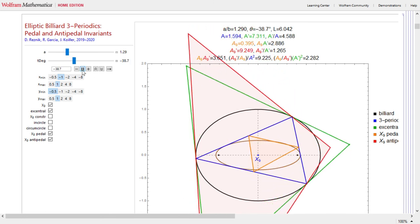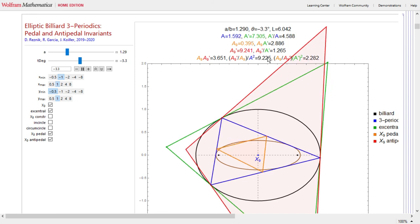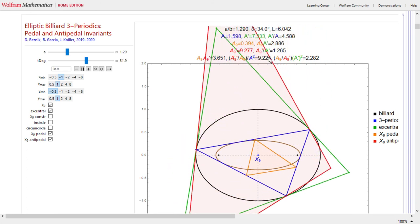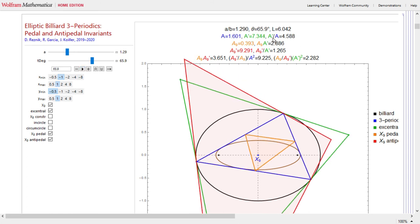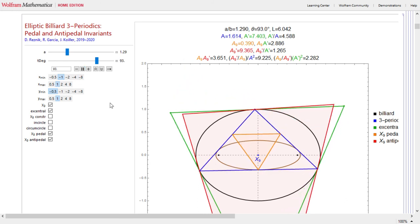We get a bunch of corollary invariants. First corollary invariant, and this stems from these two relations and the fact that A prime over A is constant, is that the product of areas of the pedal triangle with the antipedal one is invariant. Furthermore, the ratio of their areas divided by, now the blue square comes into play, the square of the area of the three-periodics is invariant. And lastly, the ratio of their areas times the square of the area of the excentral, these are all corollaries, is also invariant. So here you see a bunch of invariants.